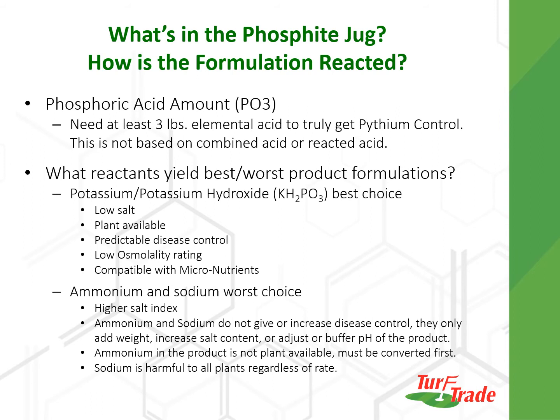So what's in the phosphite that you're buying? In order to truly get enough fungicidal activity to control pythium, you need at least three pounds of elemental acid in the product. This is not the combined acid or the reacted acid, but elemental acid. Unfortunately, it's difficult for us to know how much elemental acid is in a product because the label only shows the combined or total reacted acid — the total weight or percentages of all the reacted ingredients, not the percentage of elemental acid. And only the percentage of elemental acid tells you how much fungicidal activity you're actually going to be able to get.